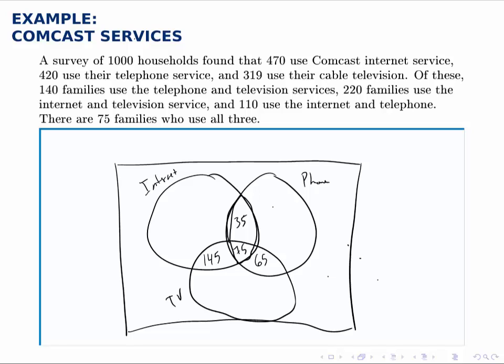Now we can work out to the rest of the circles. We're told that 470 families use the internet service as a whole. We've already accounted for 145 plus 75, plus 35, for a total of 255. Since there are 470 total, that leaves 215 families who use the internet but not the other services.